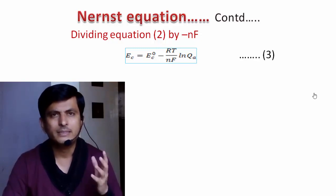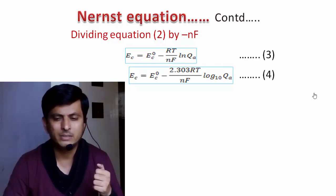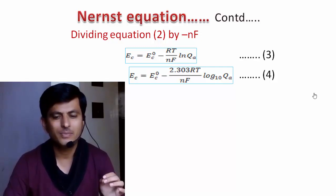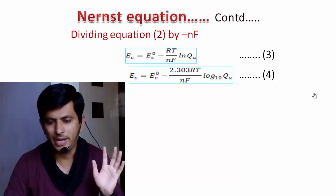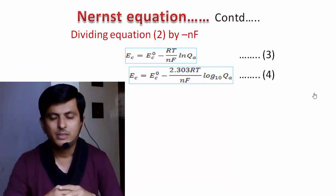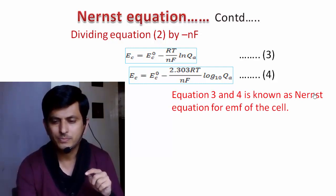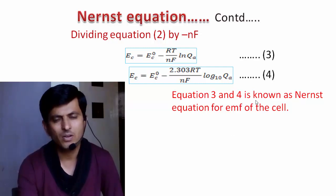When ln QA is converted to log base 10, the equation becomes: EC = E⁰C − (2.303RT / nF) log₁₀ QA. This is Equation 4, and Equations 3 and 4 together are known as the Nernst equation for the EMF of the cell.